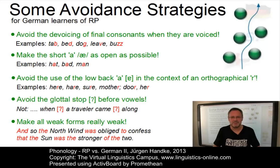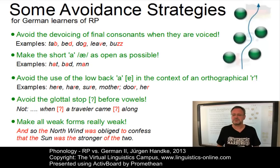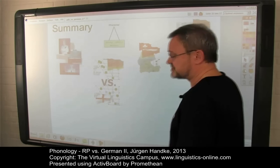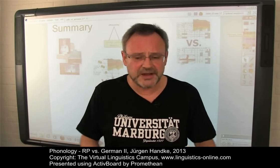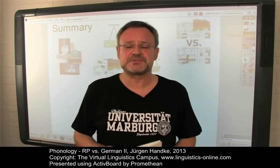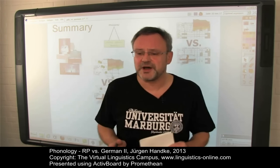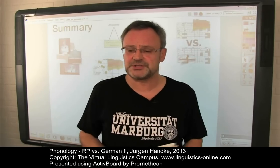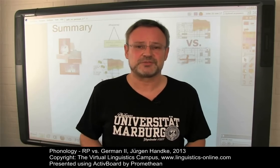A deliberate, even exaggerated weakening might help — for example, 'and so the north wind was obliged to confess that the sun was the stronger of the two.' If you adhere to these and other principles, you will be able to improve your own English, and more importantly, correct a large number of mistakes made by your present or future students. This e-lecture and its predecessor, RP vs. German 1, compared the phonology of RP and Standard German with special emphasis on difficulties from a German learner perspective. Thank you very much for your attention.